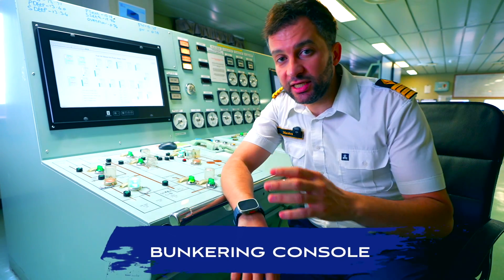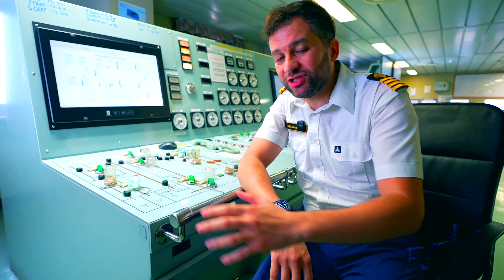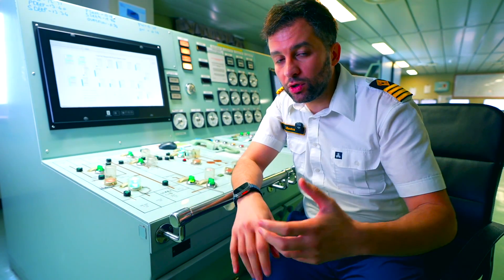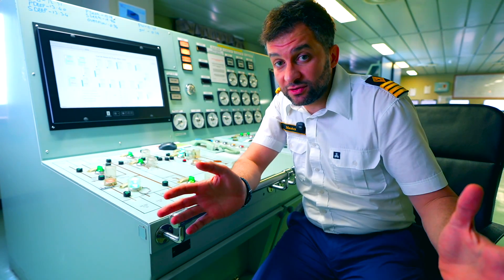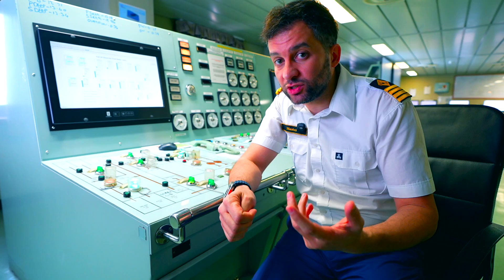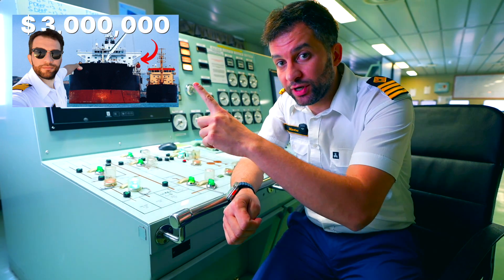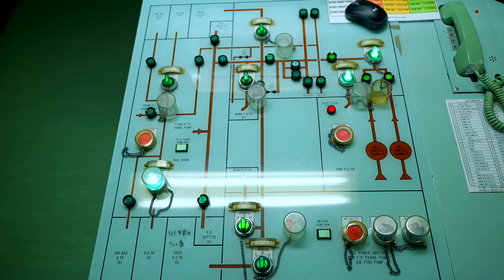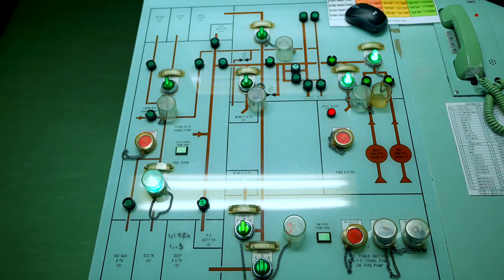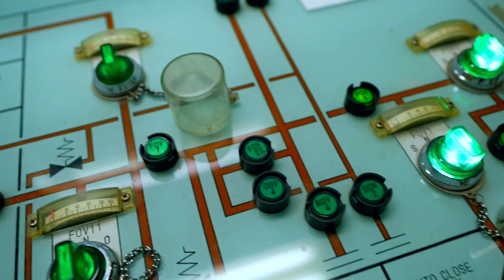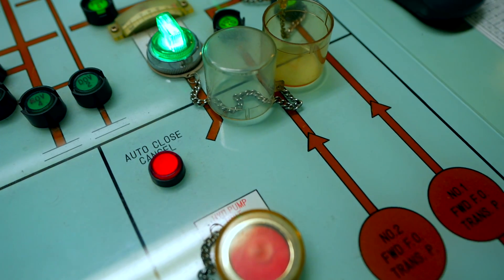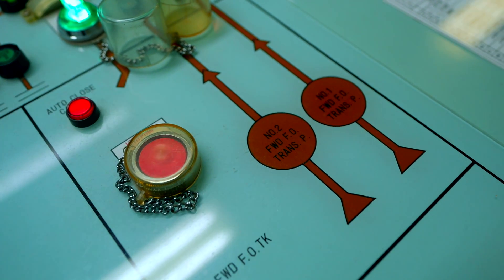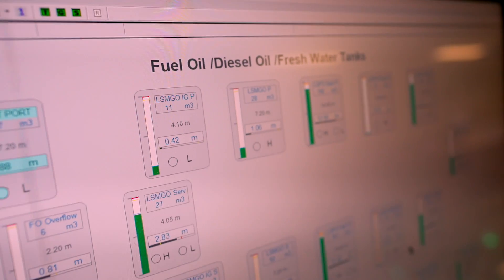The third panel is the bunkering console. Here where the chief engineer manages his bunkering operation. Bunkering is the operation of receiving fuel oil or diesel oil to fuel this ship. If you want to know more about this operation you may check out this video here. Same as the ballast panel, bunker tanks connected to bunker line which runs to both starboard and port manifold. The chief engineer performs internal fuel oil transfer using two fuel oil pumps, keeping an eye on tanks levels.